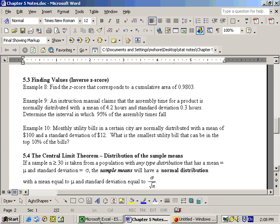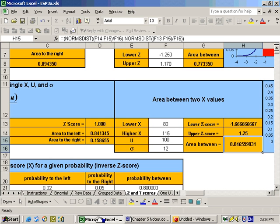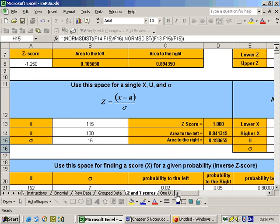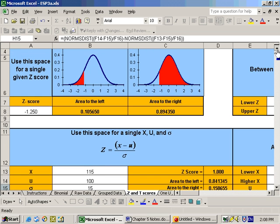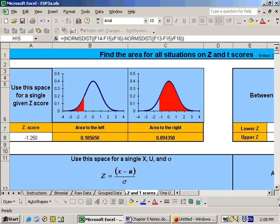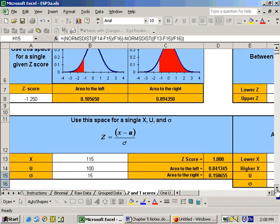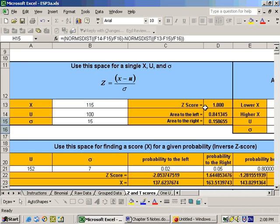So to do these, go to the Excel sheet, and again under the T and Z-score sheet, if we look over to the left a little bit, here we were at the top where we could just put in Z-scores, and here's where we could put in X, Mu, and Sigma to get Z-scores, and here is inverse Z-scores.